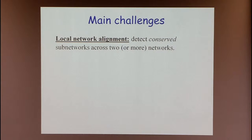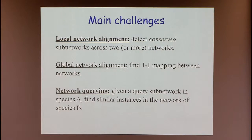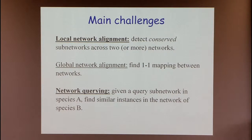There are three sub-fields in cross-species network analysis. One is local network alignment, detecting sub-networks or modules conserved across two or more species. Another is global network alignment, finding a one-to-one or many-to-many mapping between networks. The last is network querying, where we have a sub-network of interest in one species and want to discover whether it occurs in another. All these names are derived by analogy from sequence alignment, which has been very influential in biology.